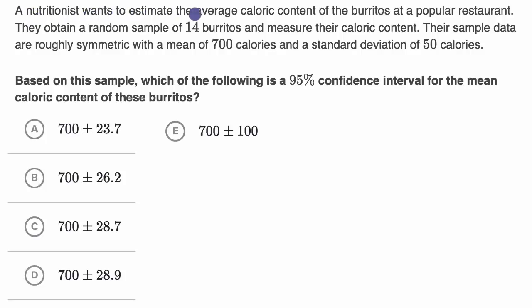A nutritionist wants to estimate the average caloric content of the burritos at a popular restaurant. They obtain a random sample of 14 burritos and measure their caloric content. Their sample data are roughly symmetric with a mean of 700 calories and a standard deviation of 50 calories. Based on this sample, which of the following is a 95% confidence interval for the mean caloric content of these burritos? Pause this video and see if you can figure it out.